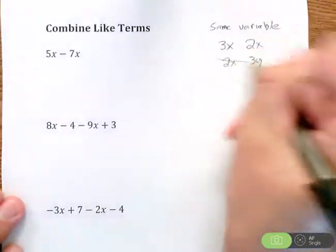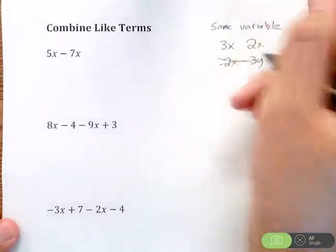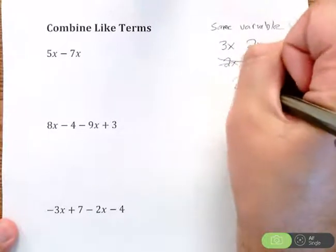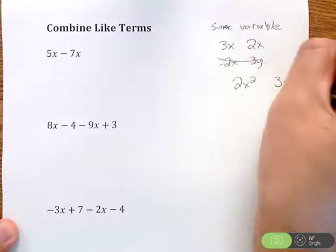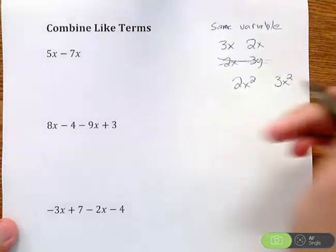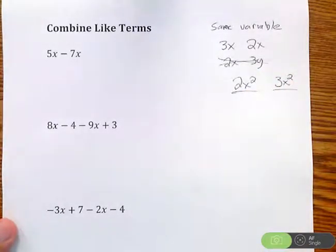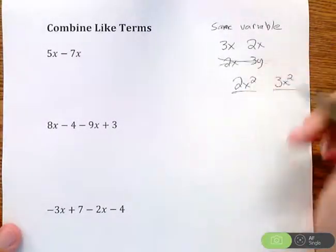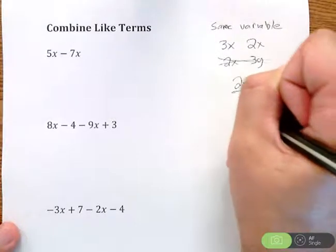A case that couldn't is if you had a 2x and a 3y - they both have variables but they're different, so these could not be combined. Also with variables, we could get a little bit more complex when there's exponents added on to them. The exponents have to be the same as well, so a 2x squared and a 3x squared could go.